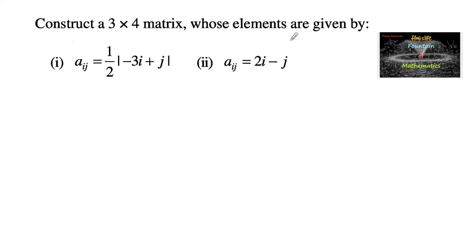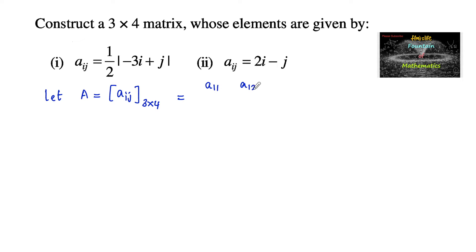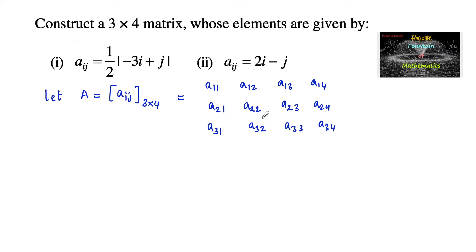Construct a 3 by 4 matrix whose elements are given. Let us consider matrix A, with element A_ij, of order 3 by 4, having 3 rows and 4 columns, so there are 12 elements total. The elements are A11, A12, A13, A14 in the first row; A21, A22, A23, A24 in the second row; and A31, A32, A33, A34 in the third row.